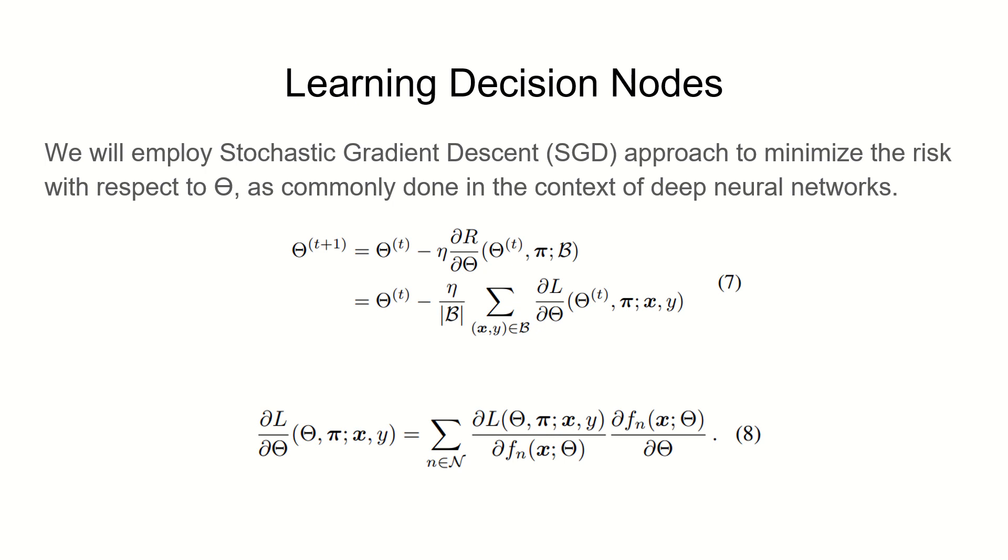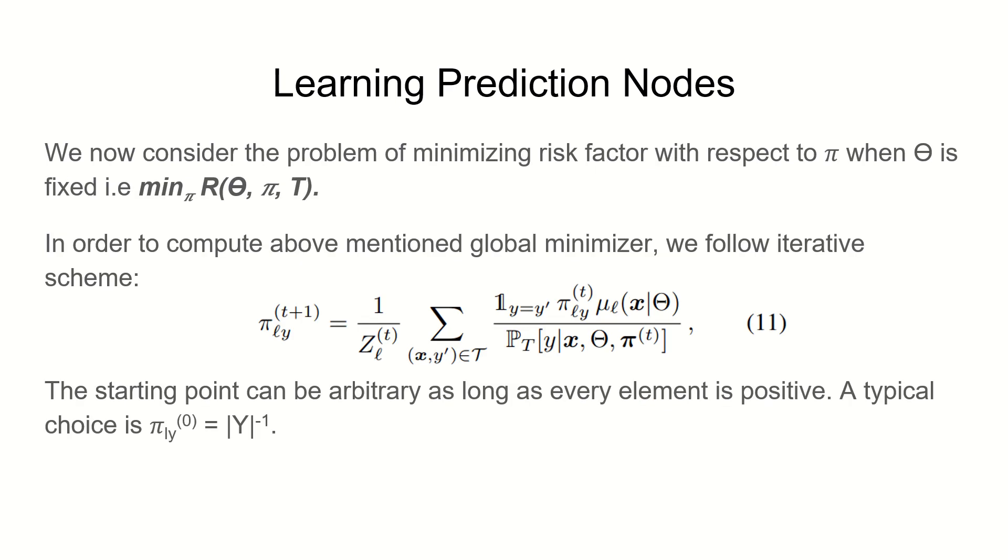Now let's minimize pi. From the previous slide we have a fixed theta. With that in mind we'll try to minimize risk factor with respect to pi. In order to do that we'll follow the iterative scheme mentioned here. The starting point can be arbitrary as long as every element is positive.